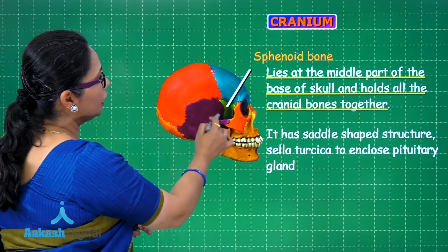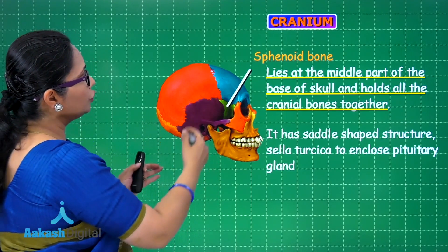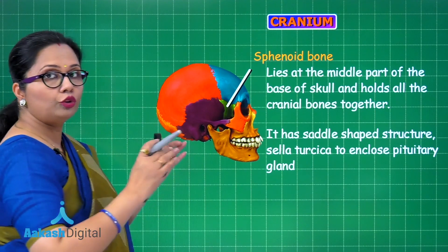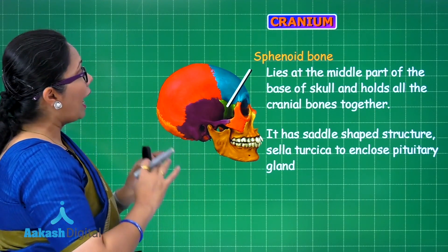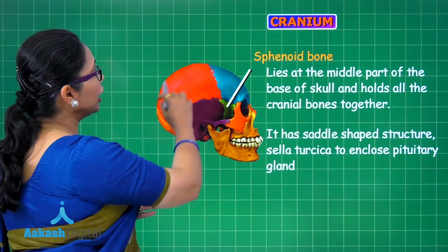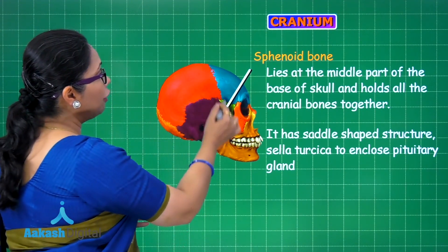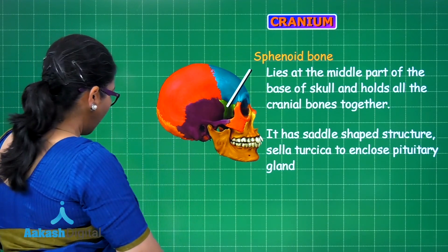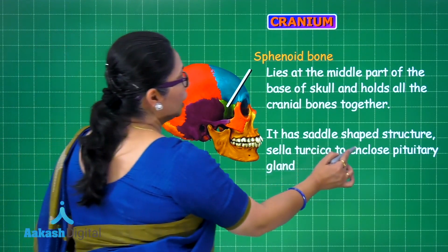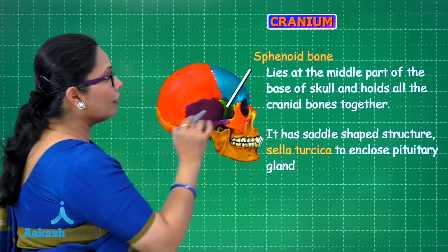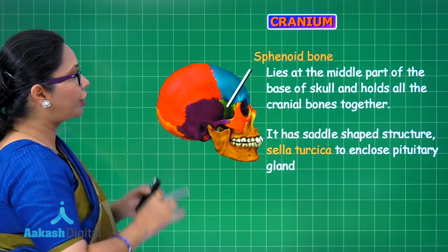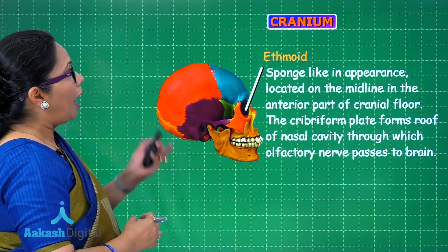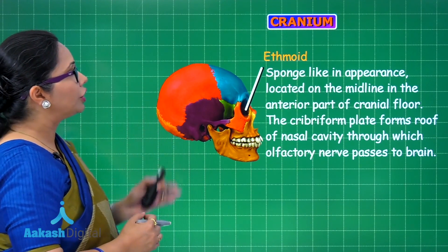The sphenoid is a single but quite large bone; its extensions are visible on both sides and the bone is almost butterfly-shaped. It is called the keystone bone because it articulates with all the cranial bones. Within the sphenoid there is a saddle-shaped structure called the sella turcica — meaning 'Turkish saddle' — where the pituitary gland is located and protected.